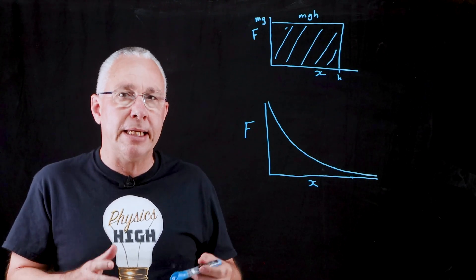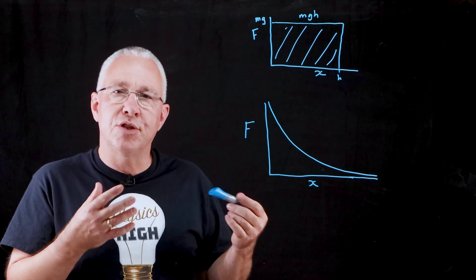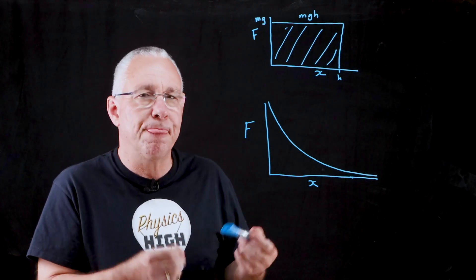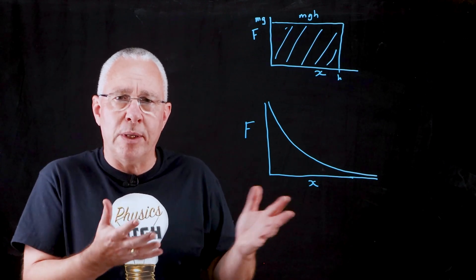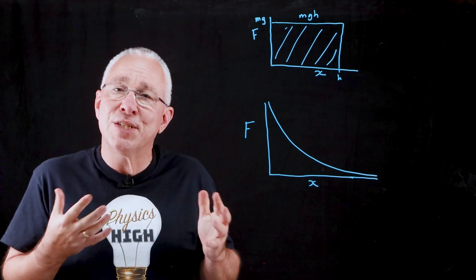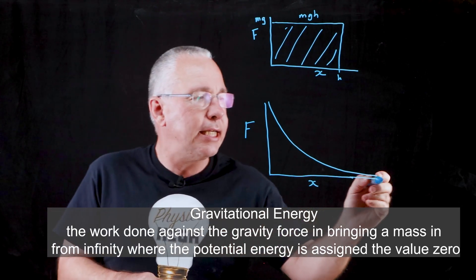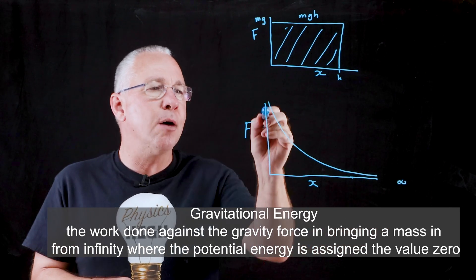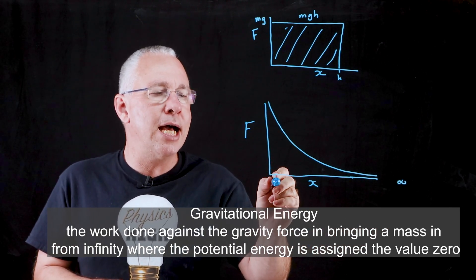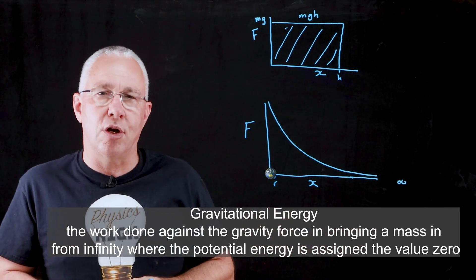Which basically means the way to work out the change in energy is to say, well, where is it zero? That's at infinity. So how do we work out the potential energy? We'll start at the position zero, which is way over here at infinity, and we'll stop at a position, let's say r, which is going to be the surface of the earth.